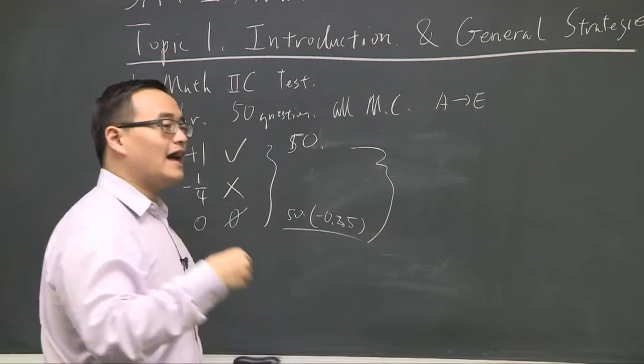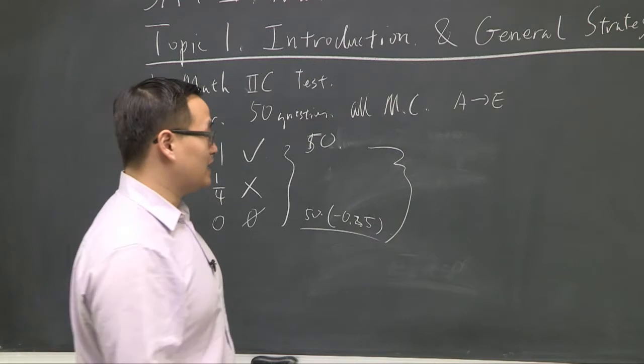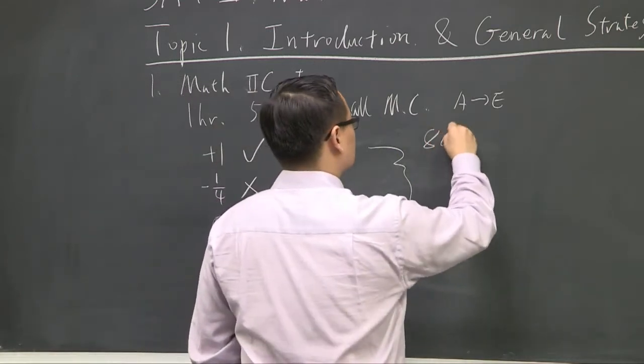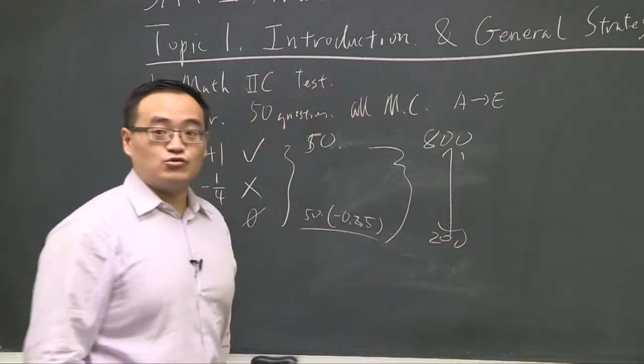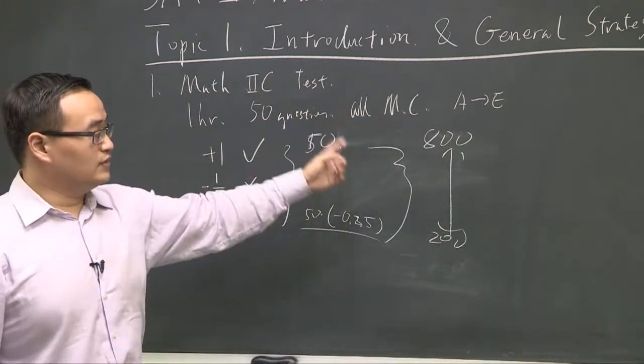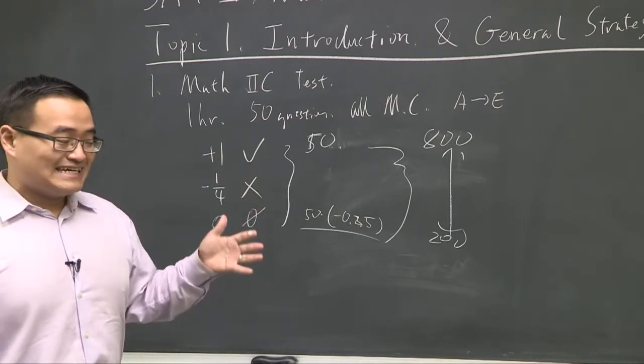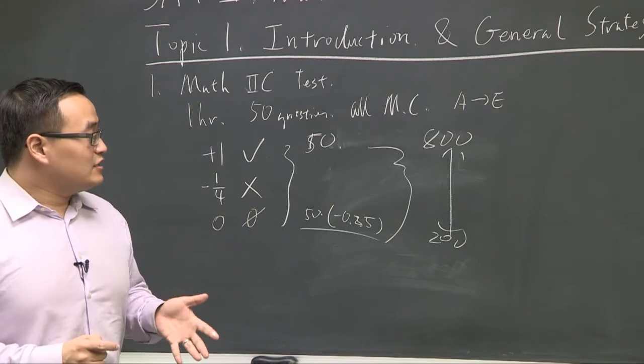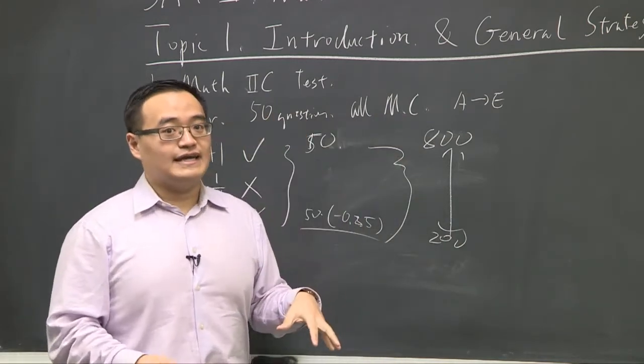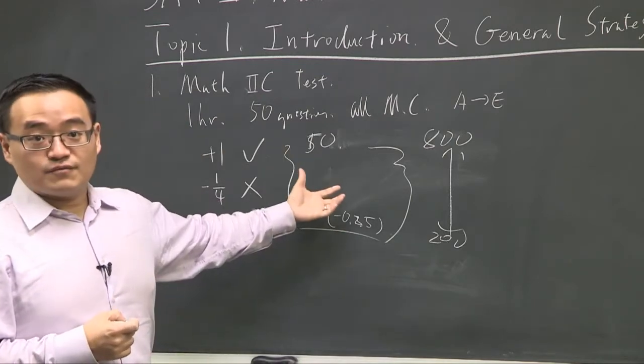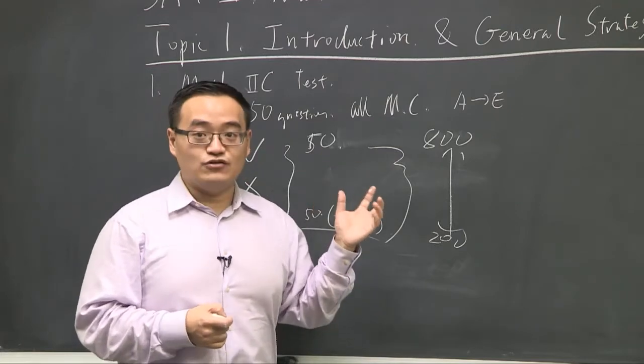And then they scale this up. So the person with the highest raw score, whatever, maybe 50, maybe 48, maybe 49, will get an 800. And the lowest score will get a 200. And the rest will be actually normally distributed into a distribution curve that's between 800 and 200. So does that mean you have to get 50 to get an 800 on a 2C? No.